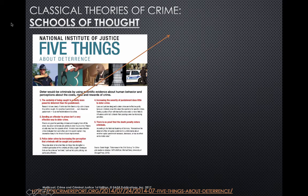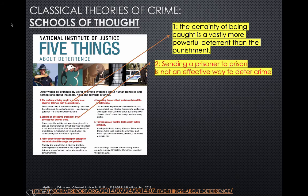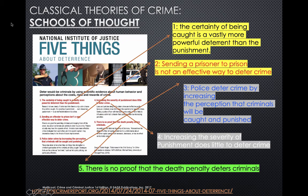From the National Institute, here are five key points from the classical school of thought: the certainty of being caught is vastly more powerful a deterrent than punishment; sending a prisoner to prison is not an effective way to deter crime; police deter crime by increasing the perception that criminals will be caught and punished; increasing the severity of punishment does little to deter crime; and there is no proof that the death penalty deters crime.